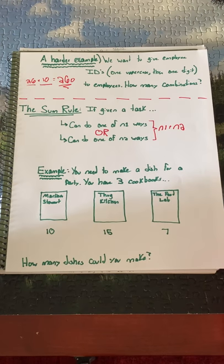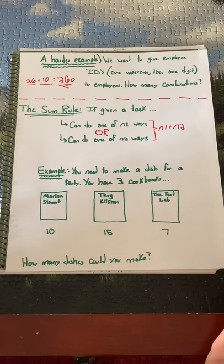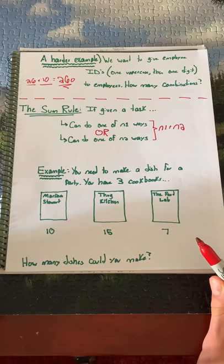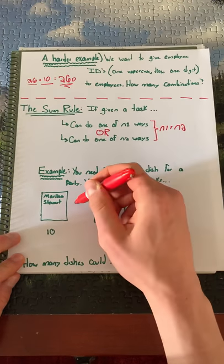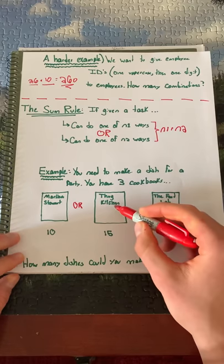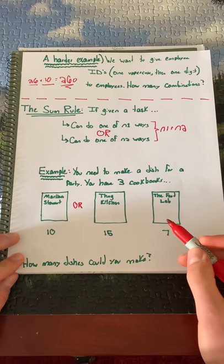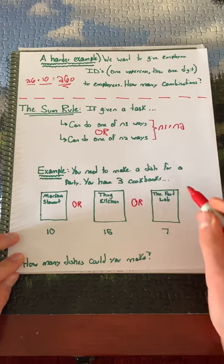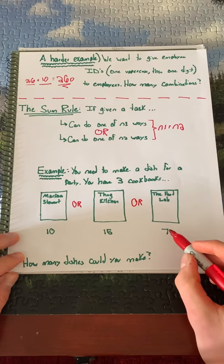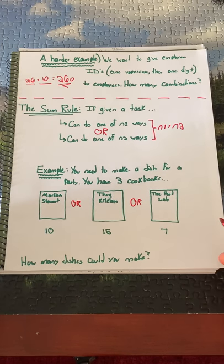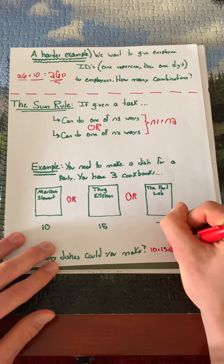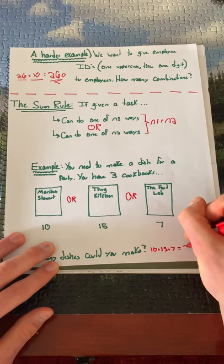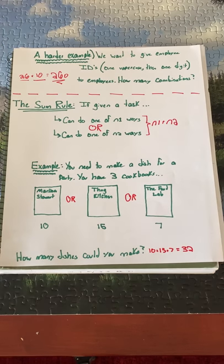So let's do an example problem. You need to make a dish for a party and you have three cookbooks. How many dishes could you make? Your Martha Stewart cookbook has 10 recipes, or you could use your Thug Kitchen cookbook which has 15 recipes, or you could use your Food Lab cookbook which has 7 recipes. This is the sum rule, so you have 10 plus 15 plus 7, which is 32 dishes that you could make.